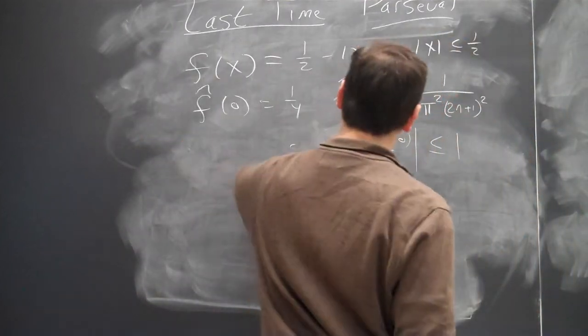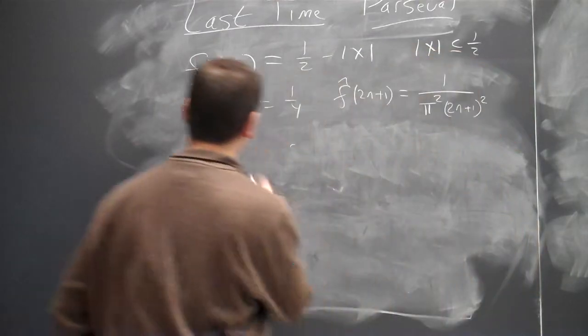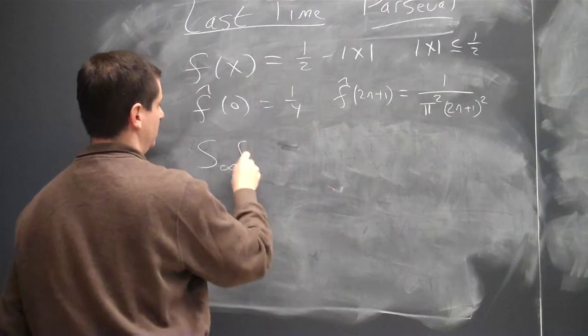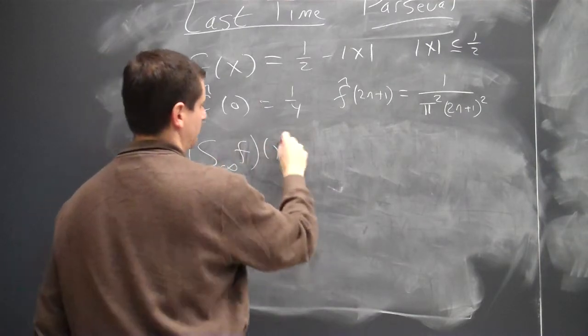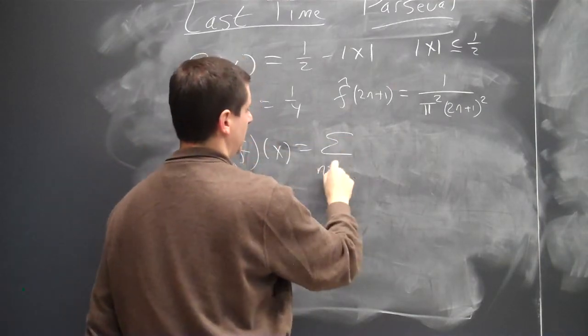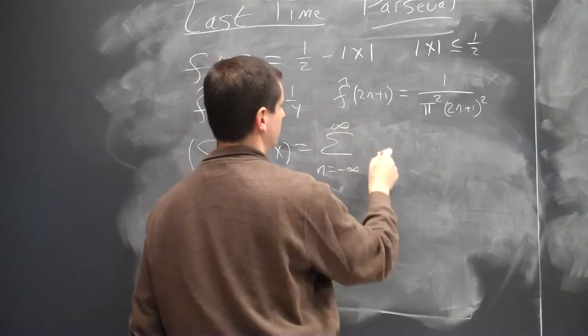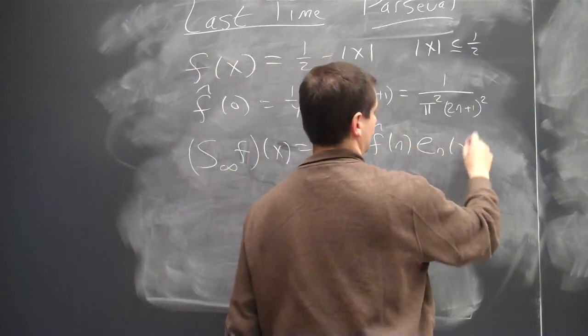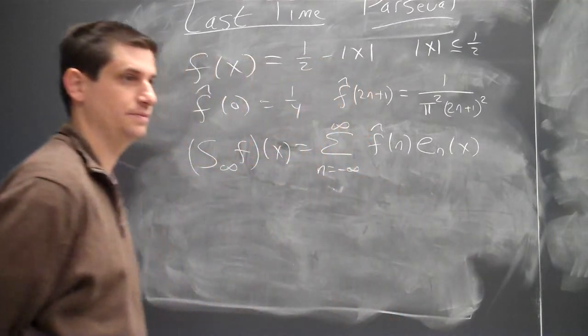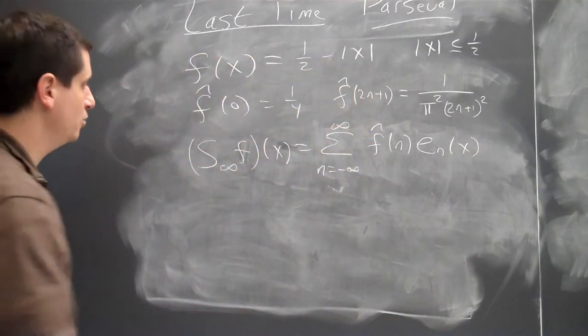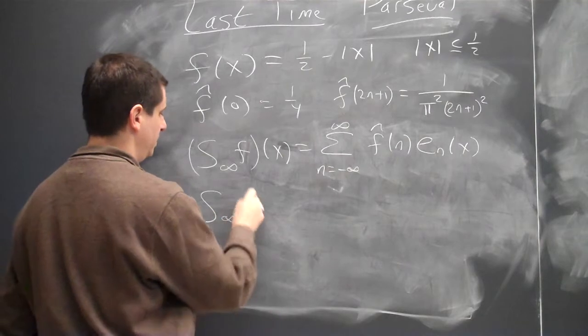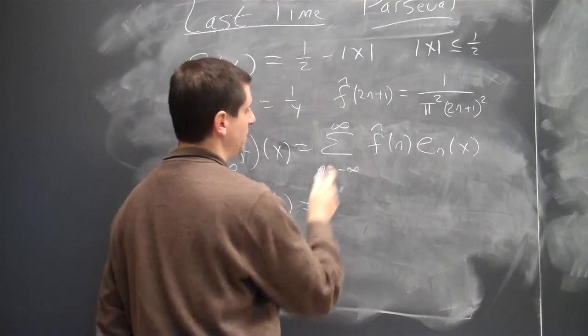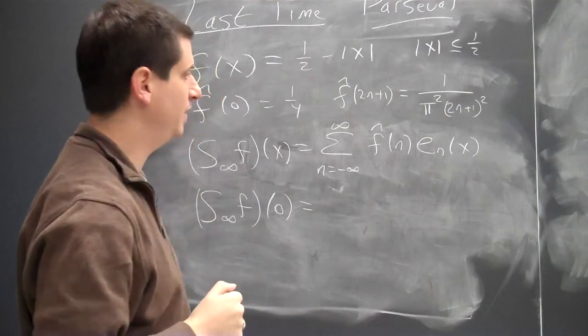All right, so since this quotient is bounded, s infinity of x, or s infinity f of x is the sum n goes from minus infinity to infinity of f hat of n, e n of x. And so now, s infinity f of zero is going to be the sum n goes from minus infinity to infinity of f hat of zero.